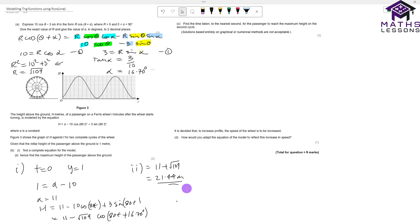Find the time taken to the nearest second for the passenger to reach the maximum height on the second cycle. What you've got to realize is this plus 16 degrees has shifted the whole cos curve left. When you've got your original cos curve that this has come from, this point has been moved to the left, so we're starting from over here.